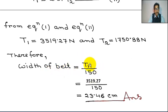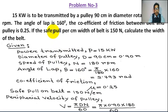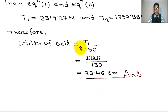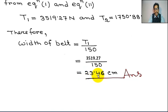To calculate the width of the belt, we use T1 divided by the safe pull per centimeter width of belt, which is 150 Newton. We always take the greater value, T1. So width equal to T1 by 150 equal to 3519.27 by 150 equal to 23.46 centimeter. This is the answer — the width of the belt. Thank you.